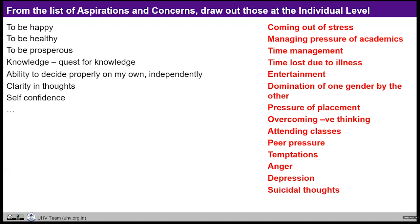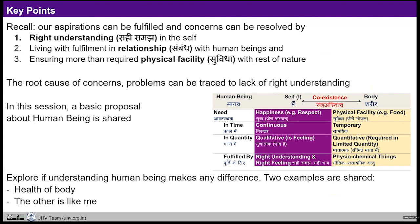The second conclusion is that in general, our effort is mostly for physical facility, and we think it will fulfill all aspirations and resolve all concerns. If we are able to see that other things are also required, more effort will be put on developing right understanding. For students to draw this conclusion may be hard right away, but at least they should grasp that there is a possibility of being at peace and of developing ourselves, and that there is something like right understanding and right feeling — which will also be covered in UHV2. In a later session, we also take the aspirations and concerns at the individual level and connect them with right understanding.